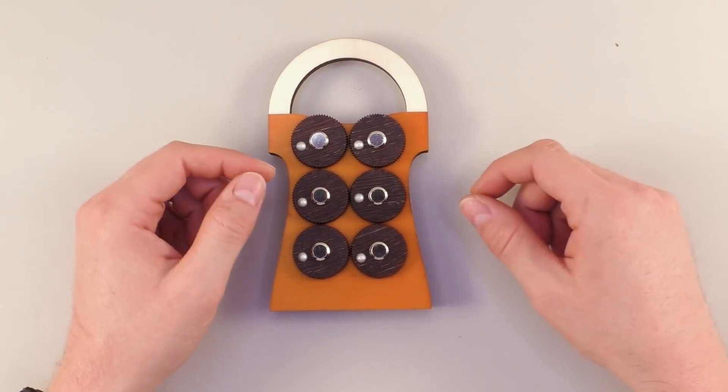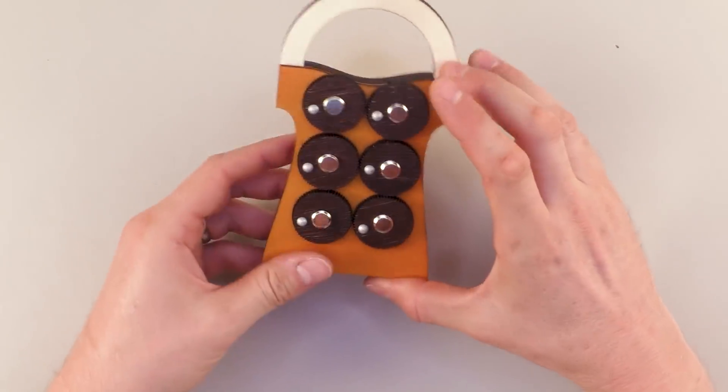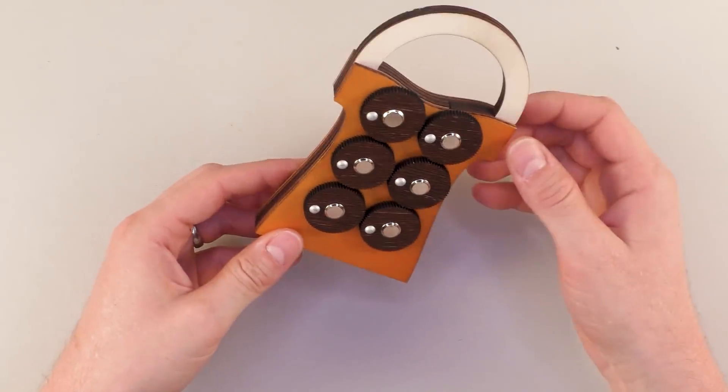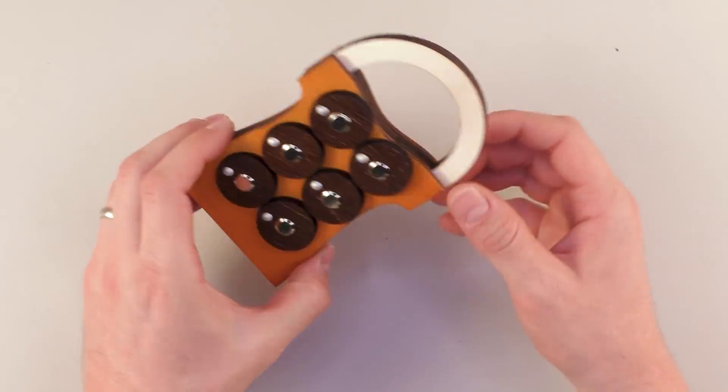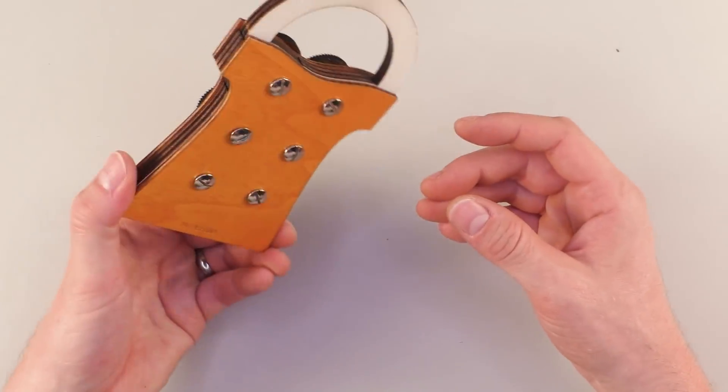Hi and welcome to another episode of Mr. Puzzle with today's puzzle, a wooden puzzle lock called Kassenschloss or cash register lock in English, made by Konstantin Spiele in Germany out of laser-cut wood.